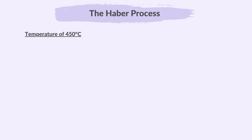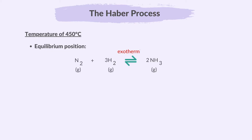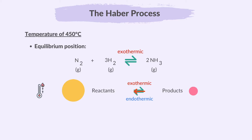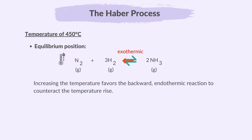Let's see why a temperature of 450 degrees Celsius is used. In terms of rate of reaction, high temperatures usually speed up both forward and reverse reactions. In terms of equilibrium position, the forward reaction in the Haber process releases heat, so it's an exothermic reaction. When the temperature increases, the equilibrium shifts towards the endothermic reaction, which absorbs heat. So increasing the temperature in the Haber process actually favors the backward endothermic reaction to counteract the temperature rise.